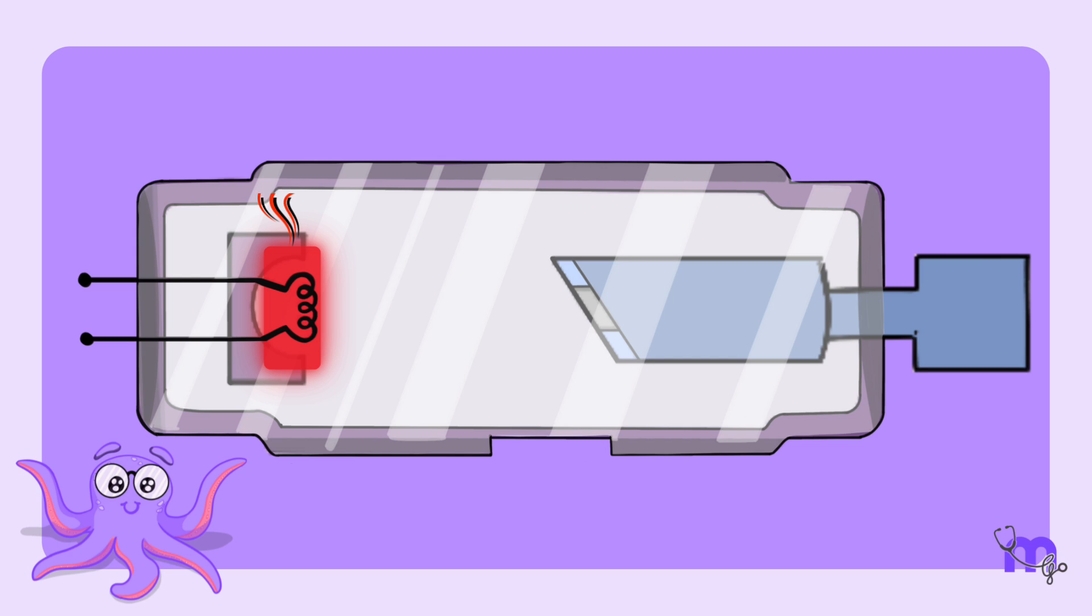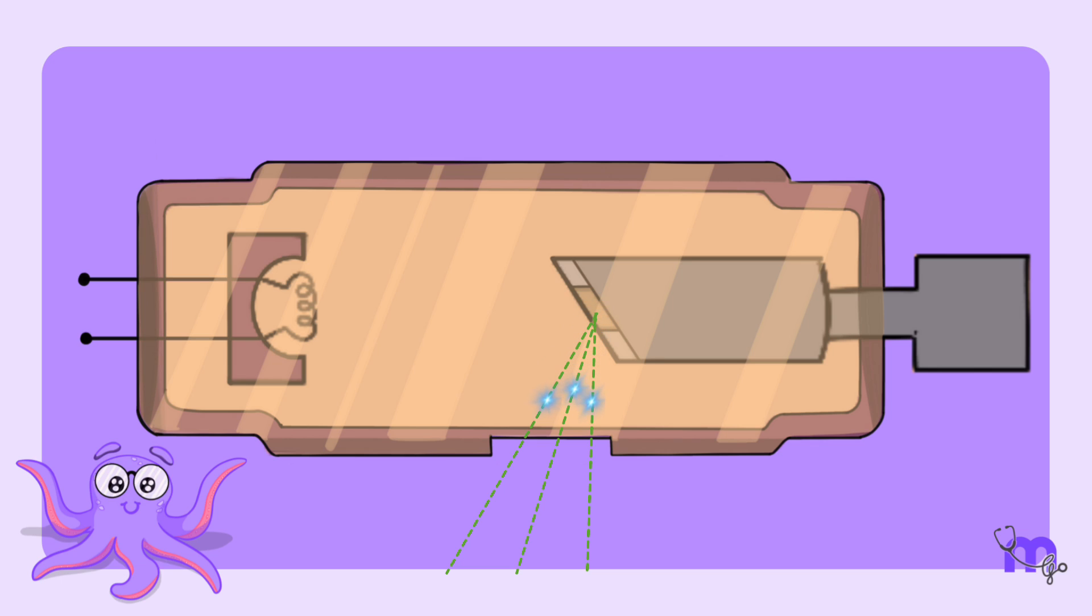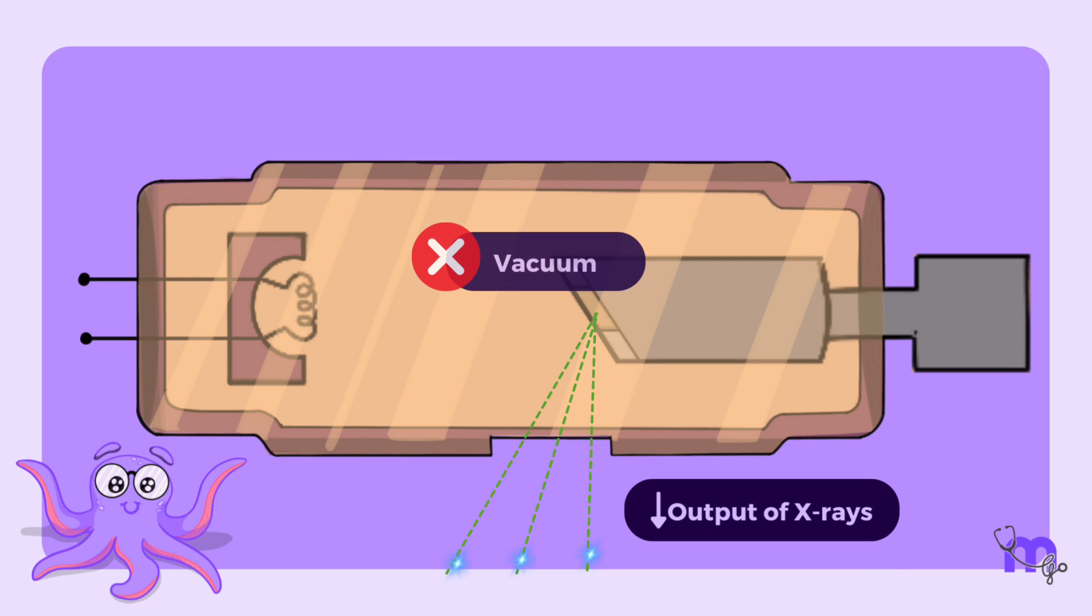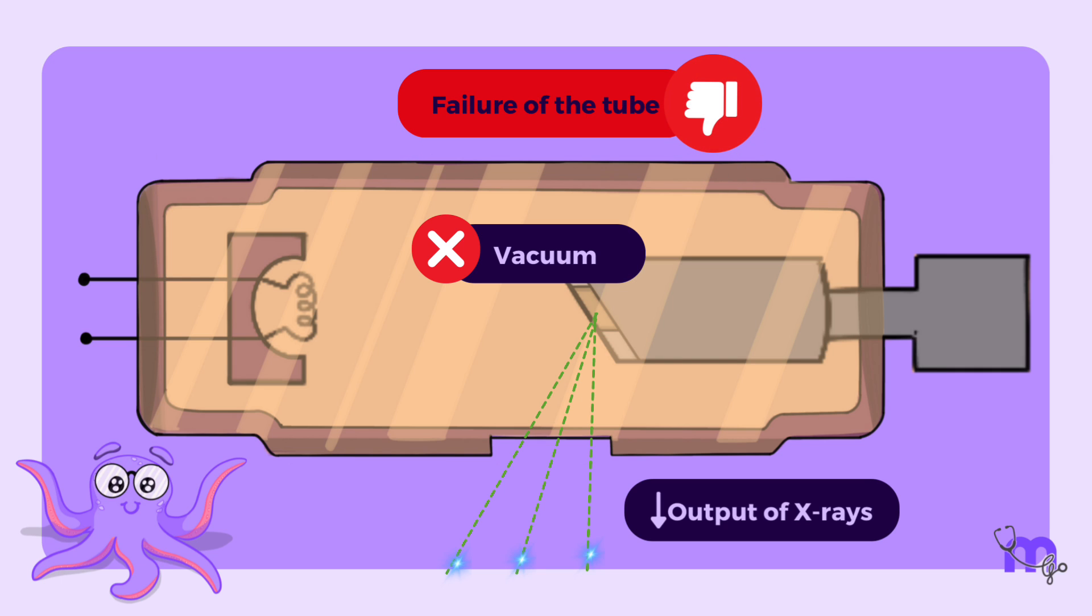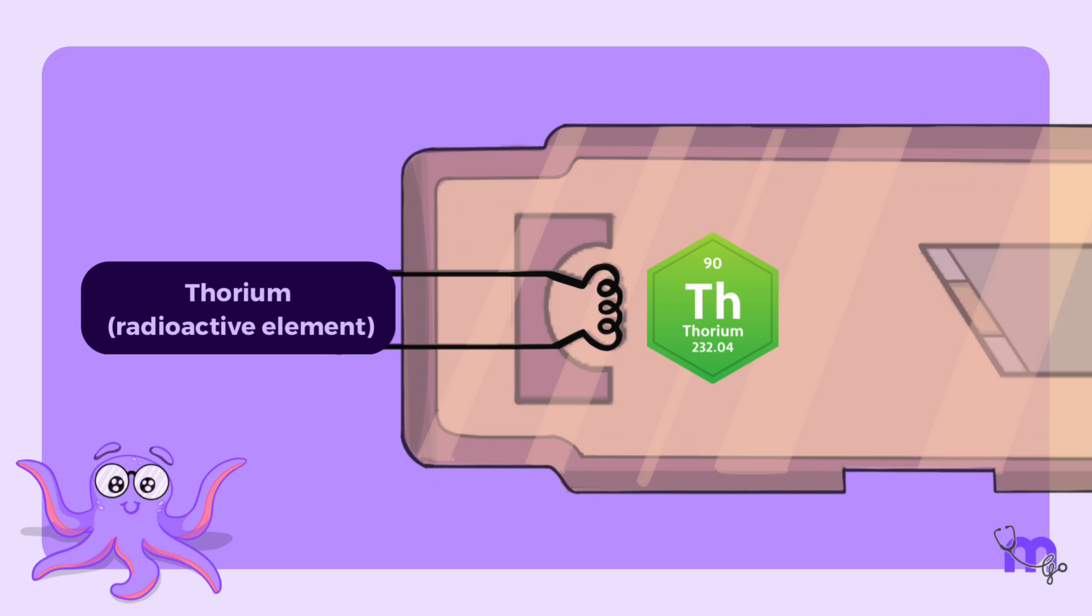Over time, the filament gets vaporized into gaseous form because of the heat and solidifies on the glass of the X-ray tube. This is called sun burning or sun tanning of the tube. This consequently leads to reduced output of the X-ray tube, destruction of the vacuum, and ultimately tube failure. To delay this process, thorium, a radioactive metallic element, is added to the filament material.